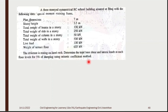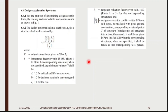The seismic coefficient method is another name for the Equivalent Static Method. It is called so because the formula VB = AH × W uses AH, the horizontal seismic coefficient. Clause 6.4 is the design acceleration spectrum where this formula is found.